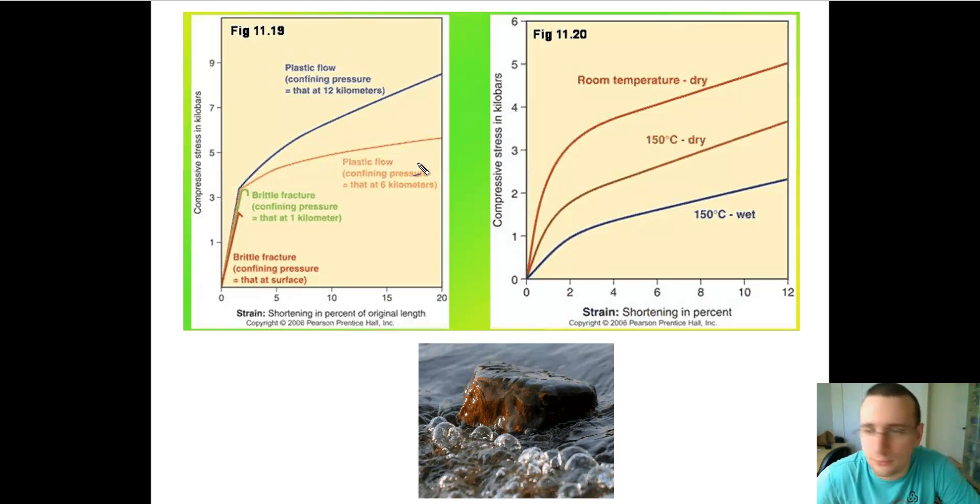So, for example, you see on figure 1120 that a very hot, wet rock will actually bend faster under less pressure than a rock that's dry. So the same rock that was dry will actually take a lot more pressure to bend just the same than a wet rock. So the wetness of the rock makes it easier for the rock to bend.